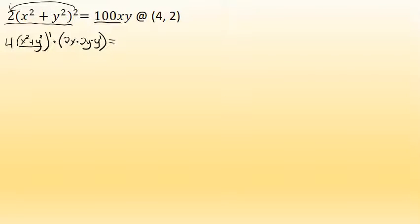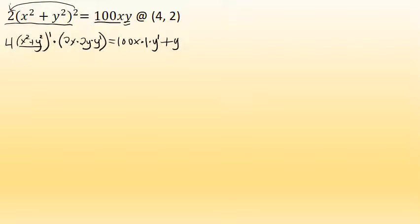On the right side of the equation I have 100xy. I'm going to consider 100x to be a first factor and y to be a second factor of a product, and I will apply the product rule. The product rule states that the derivative is the first factor unchanged — 100x in this case — times the derivative of the second factor. The derivative of y is 1, but because I'm taking a derivative with respect to x, I include a factor of y prime. The second part of the product rule: the second factor y is left unchanged and multiplied by the derivative of the first factor, which is 100.